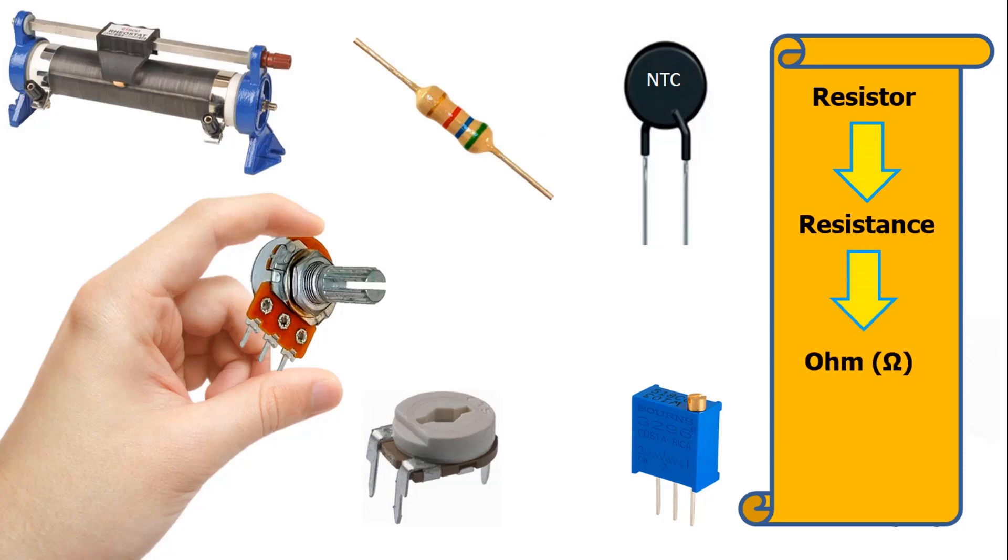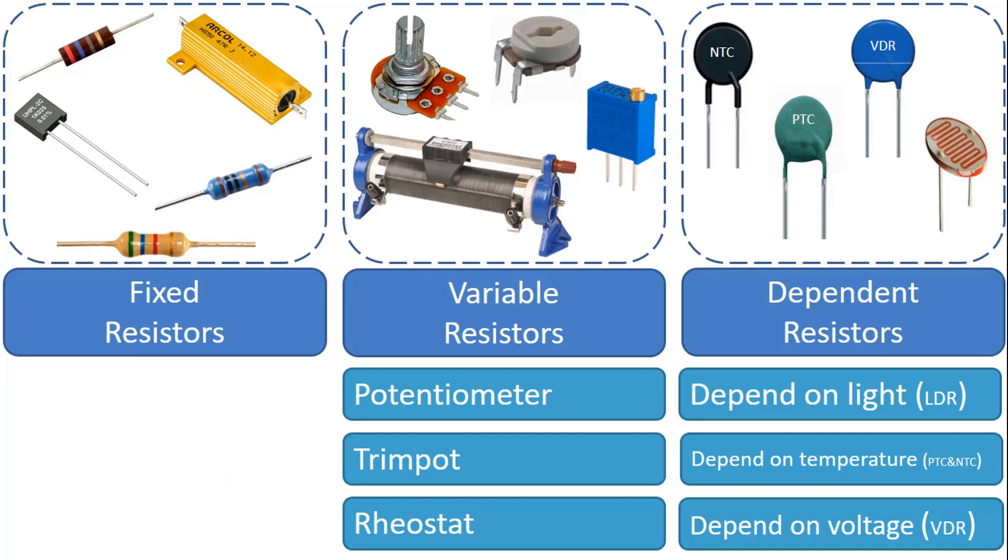The unit of the resistors are ohms and they are indicated with the letter R in the circuit. As you can see here, we can analyze the resistors in three groups: fixed resistors, variable resistors, and dependent resistors.